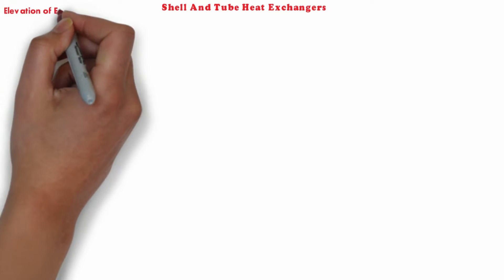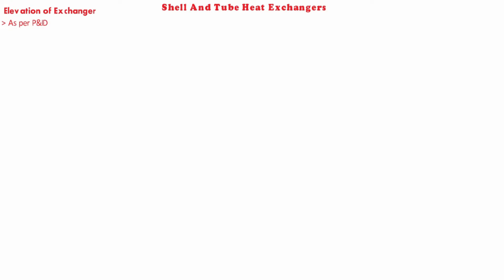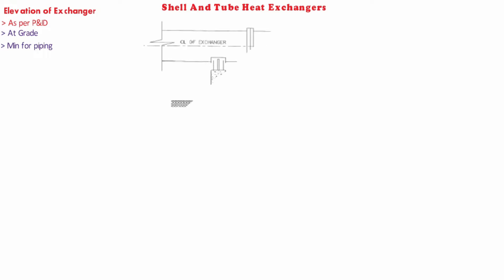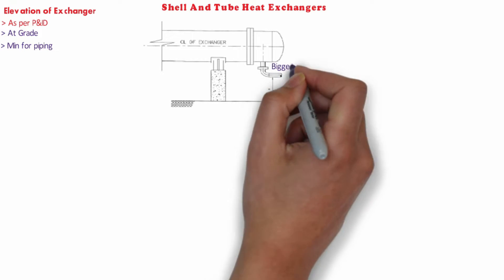Now comes the question: how can we establish the elevation of exchangers? The answer is where process requirements dictate the elevation, it will be noted on the P&ID, and where the process requirements do not dictate such elevation points, some general points can be considered. From the economic point of view, grade is the best location where it is convenient for tube bundle handling, maintenance and operation. Wherever P&ID mentions elevation of heat exchanger as minimum for piping, the exchanger should be elevated to ensure sufficient clearance below the piping connected to the biggest nozzle.